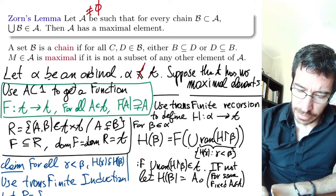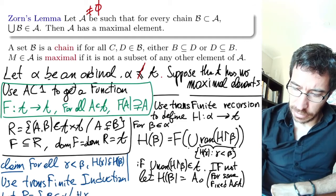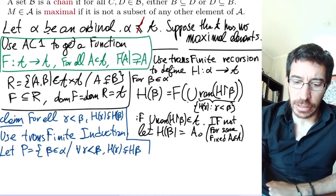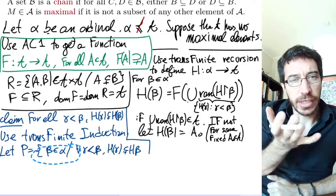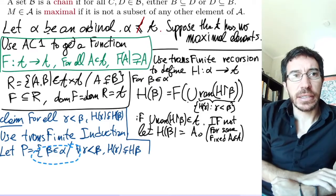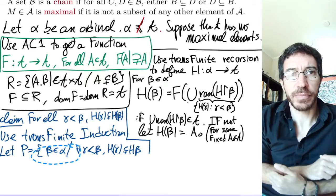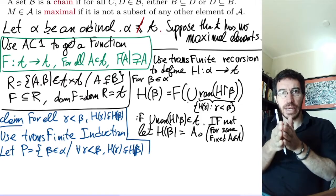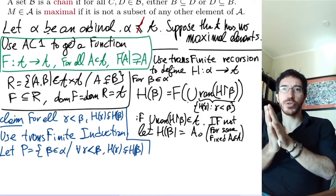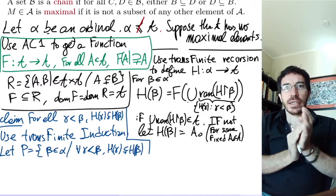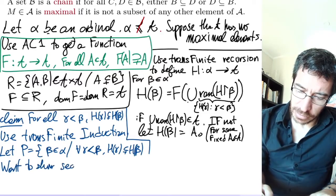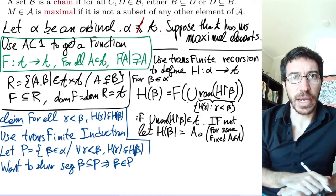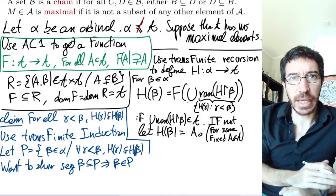Let P be the set of all betas that belong to alpha such that for every gamma less than beta, H(gamma) is properly included in H(beta). To prove this by induction, we have to assume this is true for all previous ordinals and show it for beta. So pick a beta, assume every previous element satisfies the property — beta is a subset of P — and we want to show beta belongs to P. That's what transfinite induction requires. In the case of ordinals, the segment of beta is exactly everything below beta, which is beta itself, since every ordinal is the set of all elements below it.